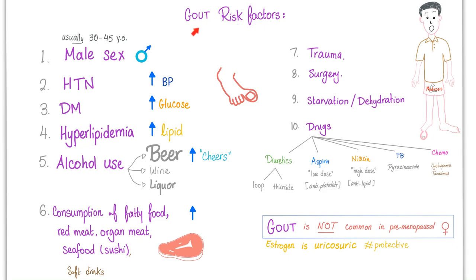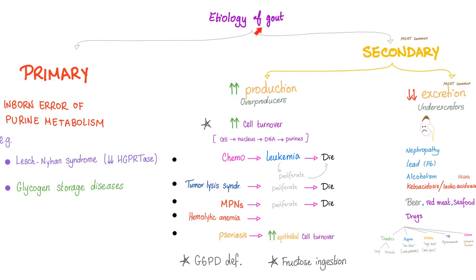The risk factors and etiology of gout were discussed before. It can be primary or secondary. Primary example: Lesch-Nyhan syndrome — deficiency of the HGPRT enzyme (hypoxanthine-guanine phosphoribosyltransferase). Secondary: you could be an over-producer or an under-excretor.